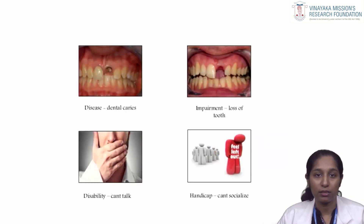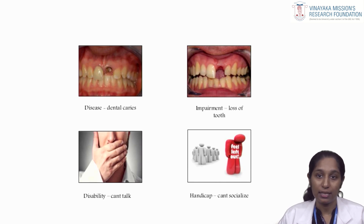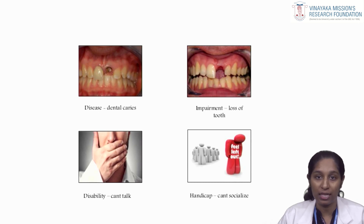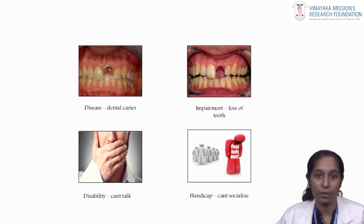For another example: suppose a person loses a tooth due to dental caries or any periodontal disease. Here the loss of tooth is the impairment. The inability to pronounce certain words clearly due to this loss of teeth is a disability. And if with this disability the person cannot socialize or is not able to discharge the obligations required of him in any ways, it is termed as handicap. I hope with these examples the concept of disability and impairment is clear.